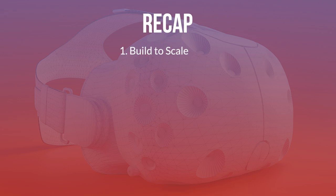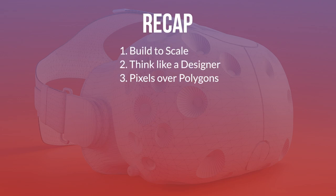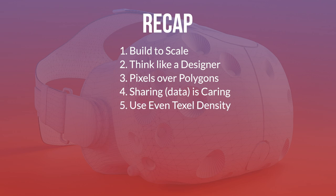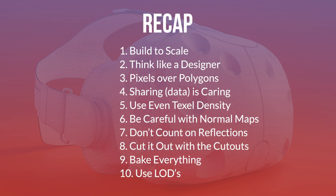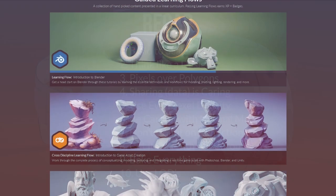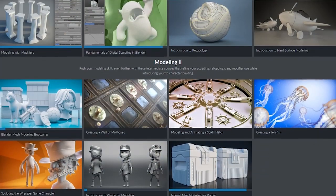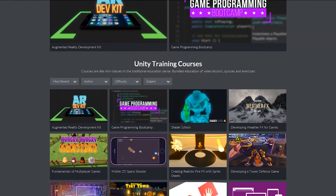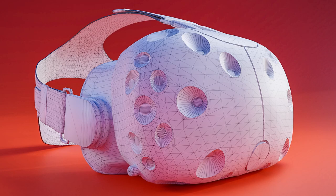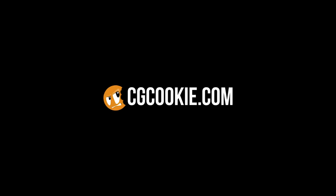To recap: build things to scale, think like a designer, use more pixels instead of more polygons except for transparency and sometimes beveling, share as many textures, materials, and other data between objects as possible, use fairly even texel density, be careful with normal maps and reflections, reduce your overdraw, bake as much as possible, and cleverly use levels of detail. With those in mind, you're now ready to start making assets for VR! Check out our huge library of courses including the Mesh Modeling Bootcamp, and our VR and AR courses on the game dev part of the site. I hope that helps — check out the description for links, and I'll see you around on CGCookie.com.